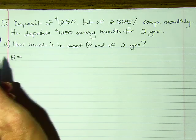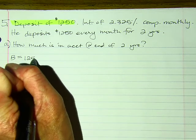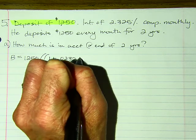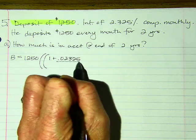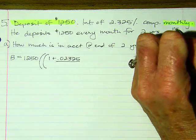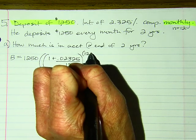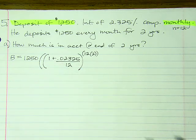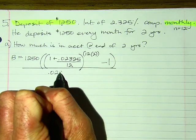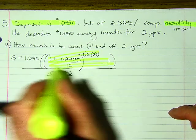Balance = deposit × [(1 + r/n)^(n×t) − 1] / (r/n). My rate is 0.02325, compounded monthly means n = 12. The exponent is 12 × 2 = 24. Then minus 1, all over the rate divided by 12. I'll do all that yellow numerator part first.